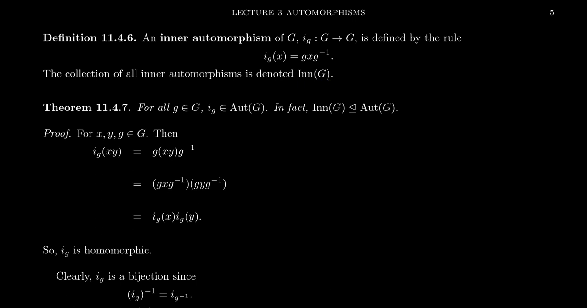Why are they called inner automorphisms? We'll see in just a second that these are in fact automorphisms — that conjugation by a fixed element is an automorphism, so it deserves that name. The idea is that "inner" means the automorphism came from the group itself: you're conjugating by an element in the group. The inner automorphisms are those symmetries of the group that come from the elements of the group itself, as opposed to outer automorphisms that come from something external.